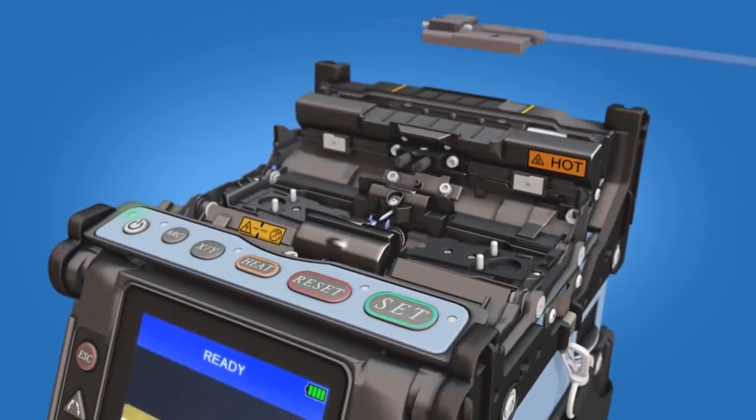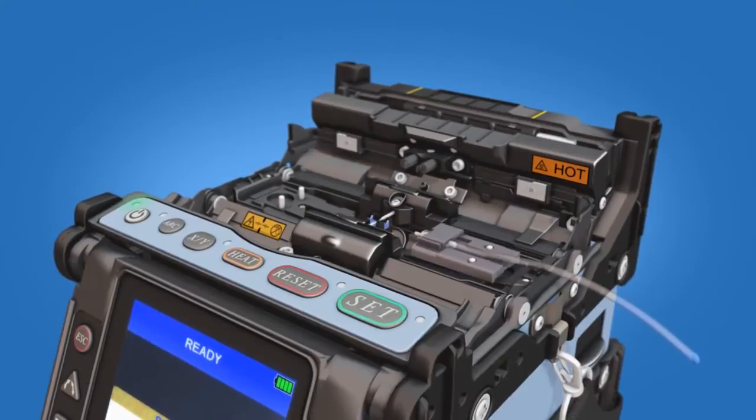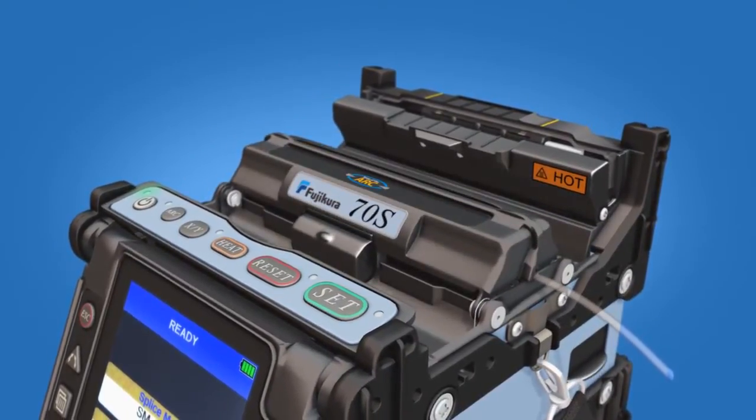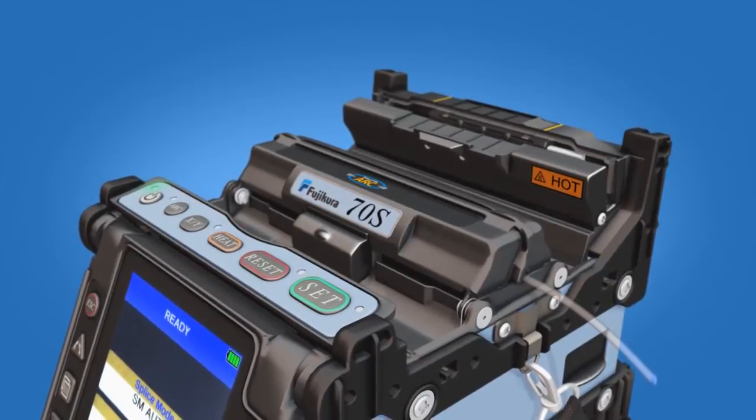Begin by loading the ferrule unit into the right side of the fusion splicer. Close the wind protector to protect the factory prepared cleave from harm and contamination.